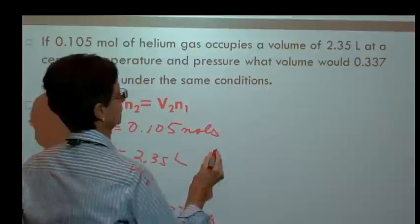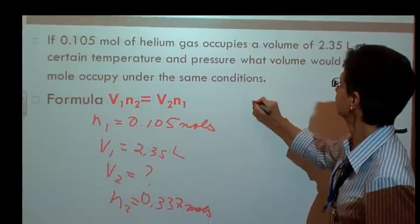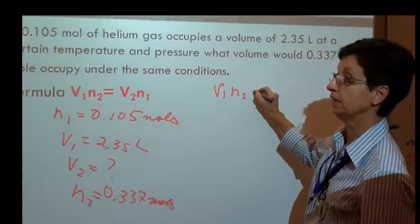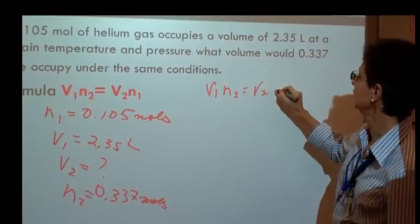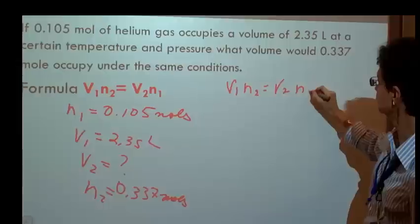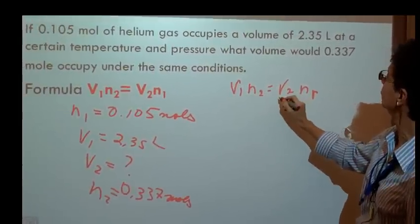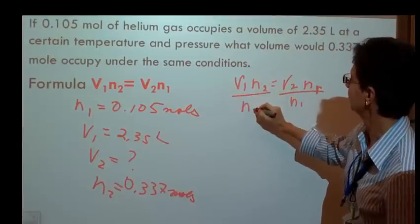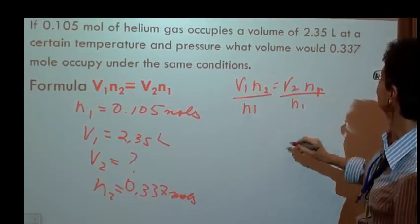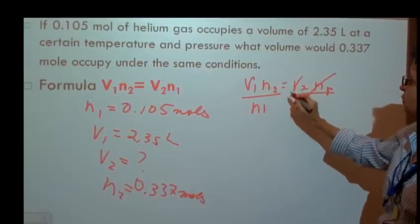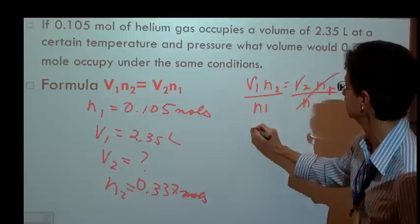So I'm going to plug in my values, and I'm going to rewrite V1 N2 equals V2 N1. Now, I'm looking for V2. I'm going to divide by N1. N1 goes away, and I'm looking for V2. So there it is. Now I'm going to plug in my numbers.